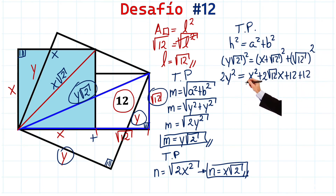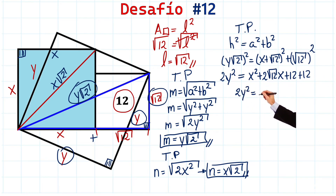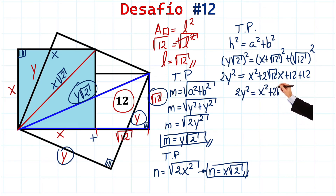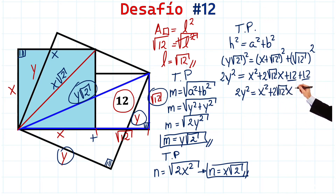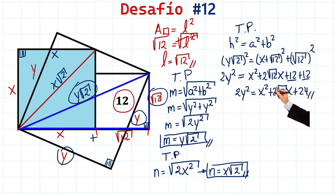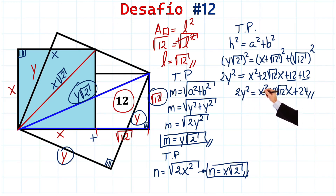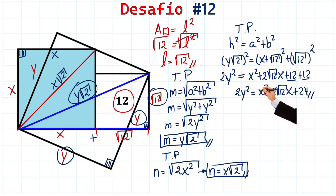We have 2Y squared, and this is going to be equal to X squared plus 2√12·X, and 12 plus 12 is 24. We have an expression here in terms of Y and in terms of X. What we are interested in is having this equation in terms of X only. So let's find the way to express Y in terms of X.